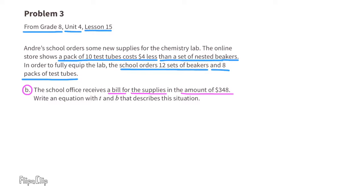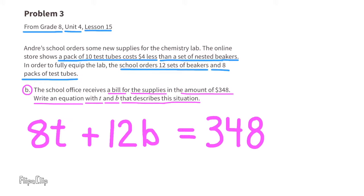The school office receives a bill for the supplies in the amount of $348. Write an equation with t and b that describes this situation. The bill for $348 represents the cost of the test tubes and the cost of the beakers — 8 packs of test tubes and 12 sets of beakers cost $348. So the equation reads: 8t + 12b = 348.